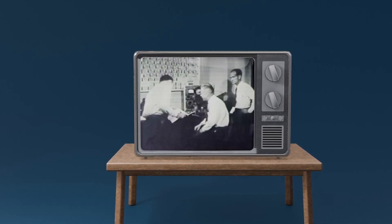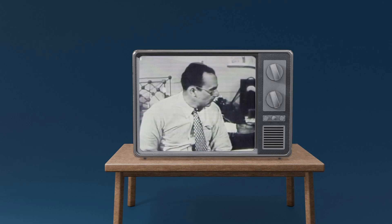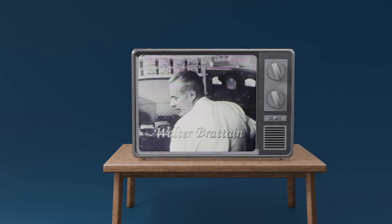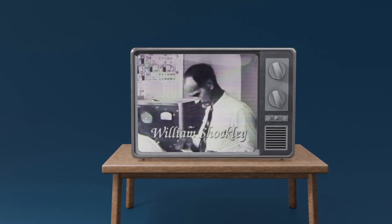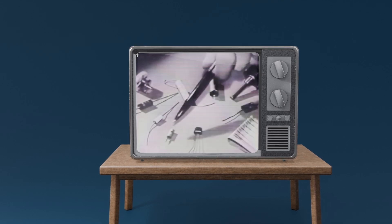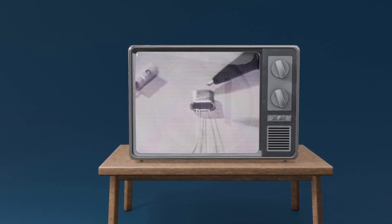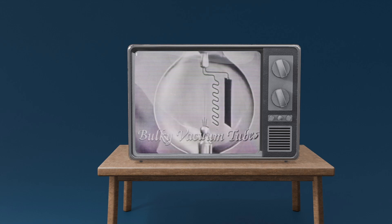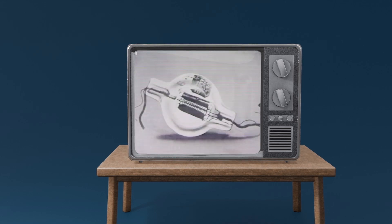But the real breakthrough came in 1947, when John Bardeen, Walter Brattain, and William Shockley at Bell Labs invented the transistor. This tiny device revolutionized electronics, replacing bulky vacuum tubes and enabling the miniaturization of technology.